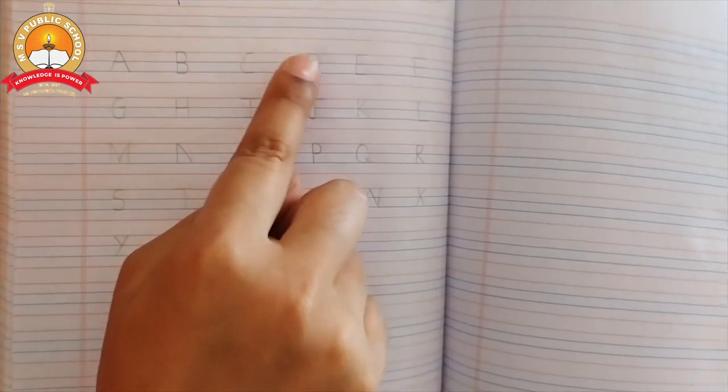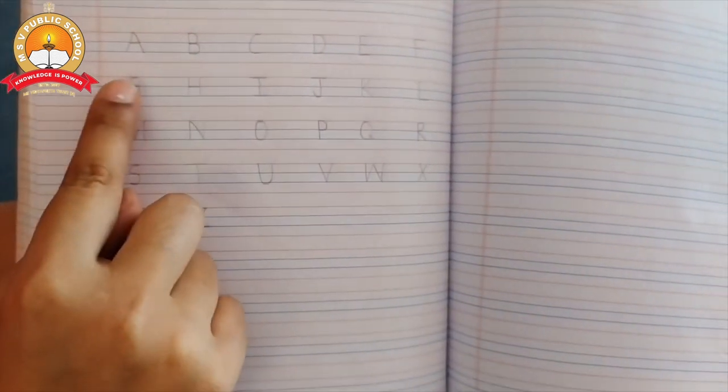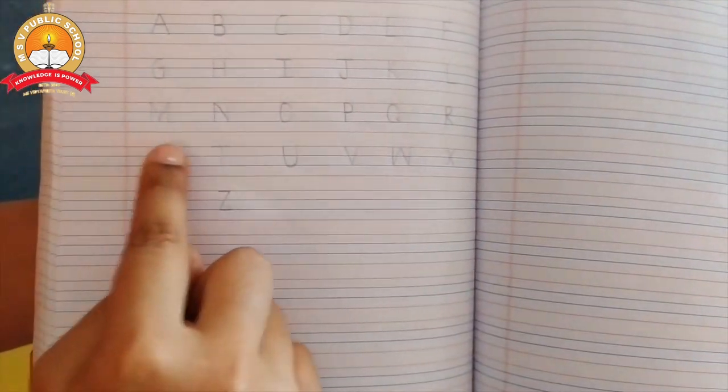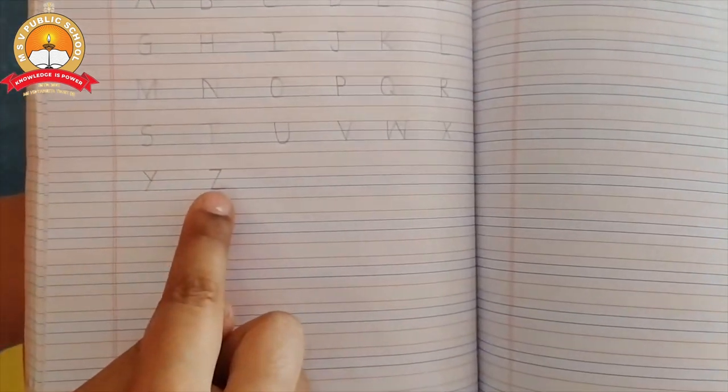A, B, C, D, E, F. In the same way, again, on the second line, six letters, six letters, six letters, and the last one, Y and Z.